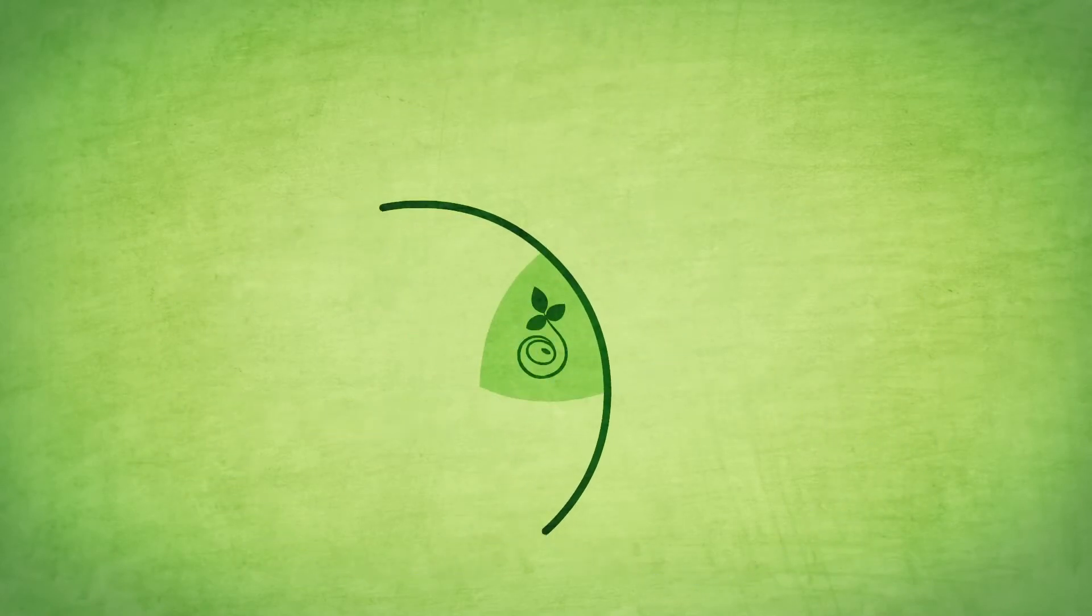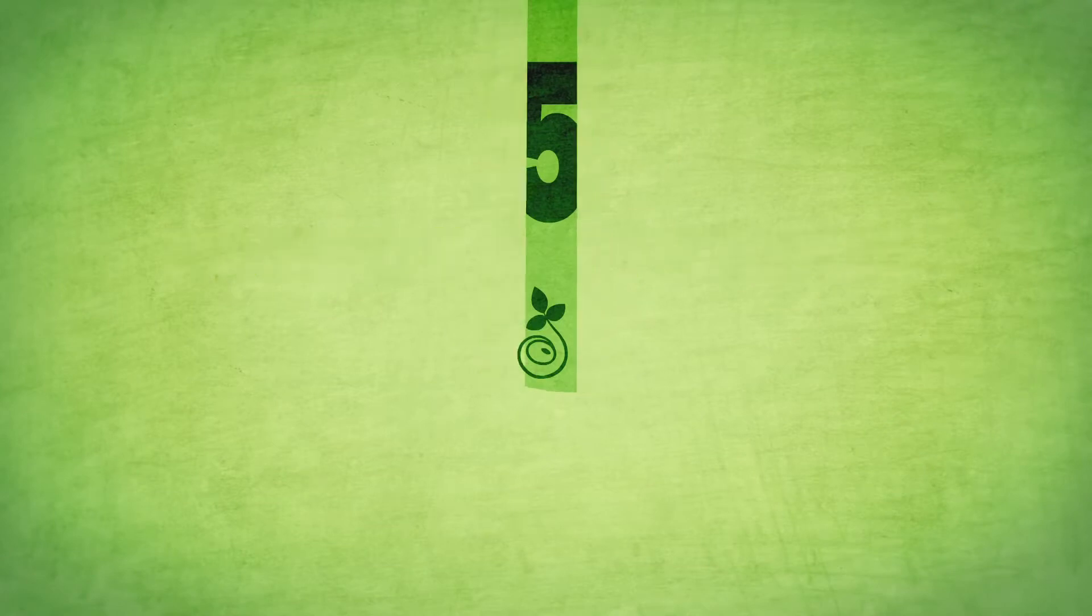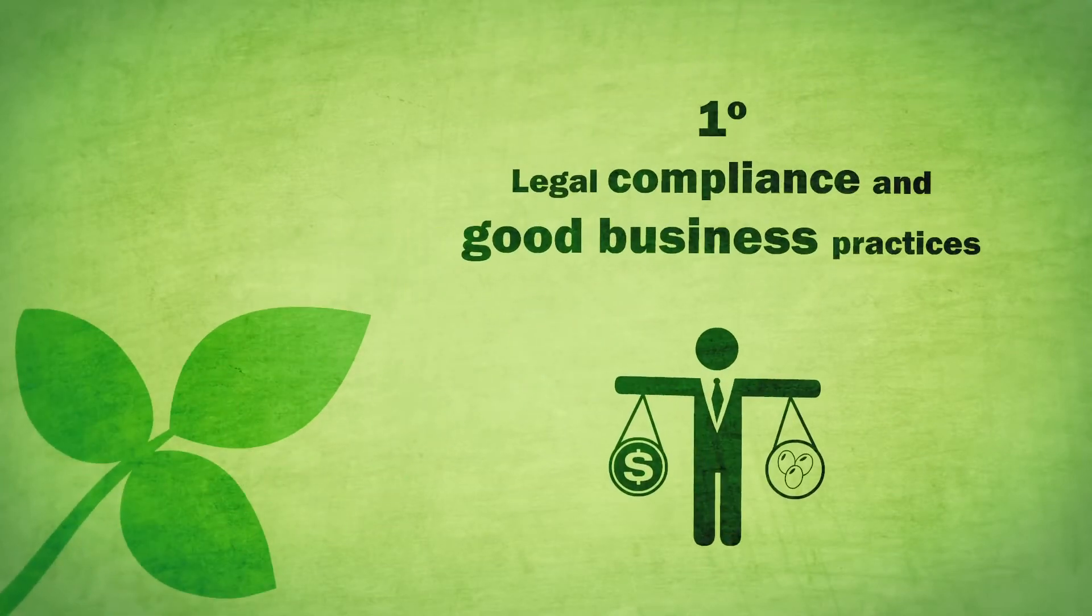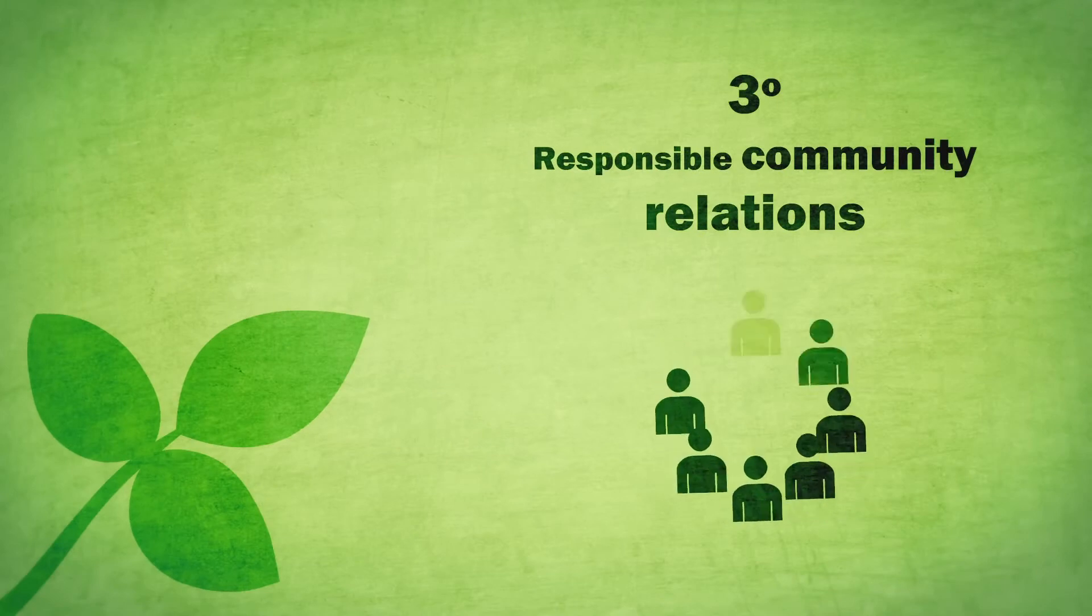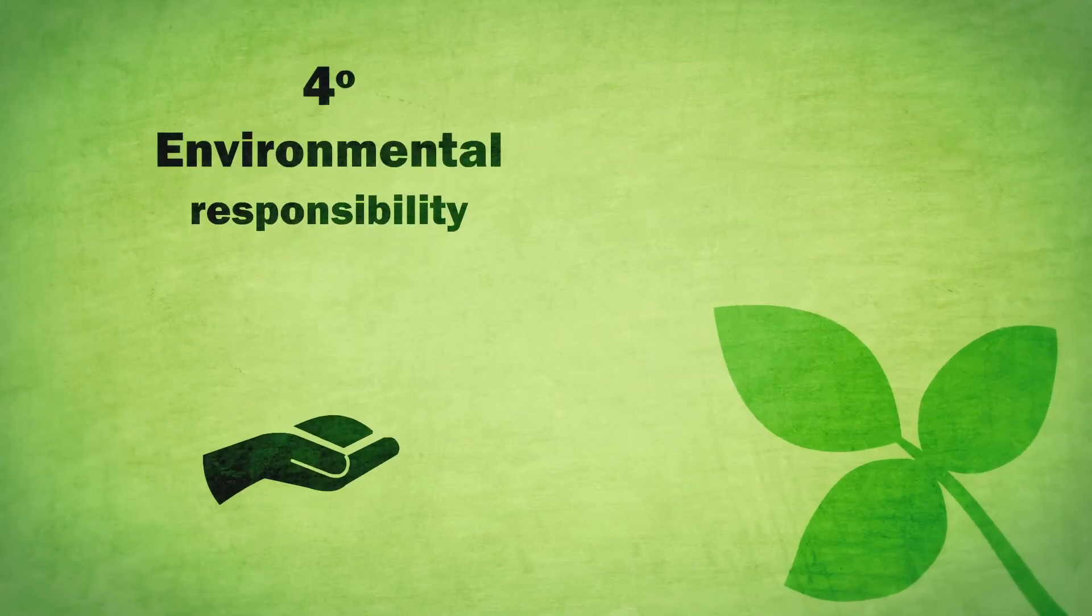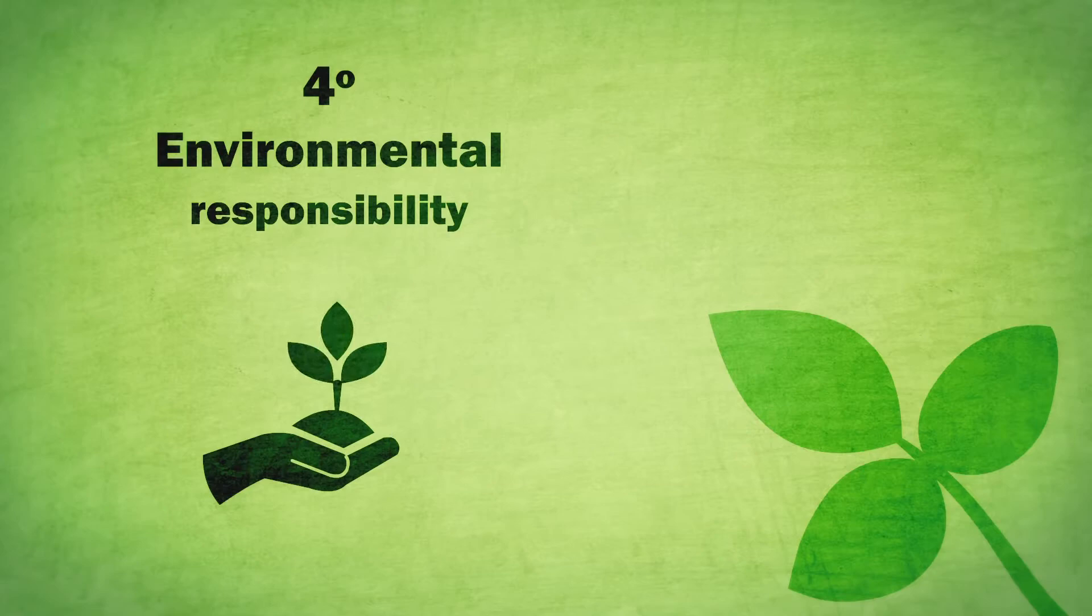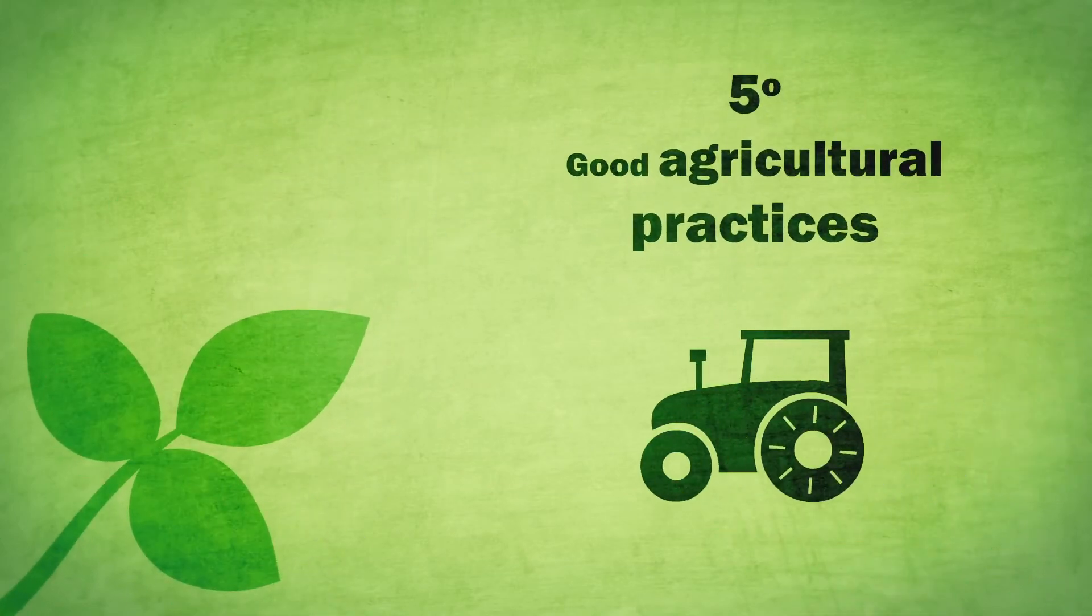The RTRS standard is based on five production principles. First, legal compliance and good business practices. Second, responsible labor conditions. Third, responsible community relations. Fourth, environmental responsibility. Fifth, good agricultural practices.